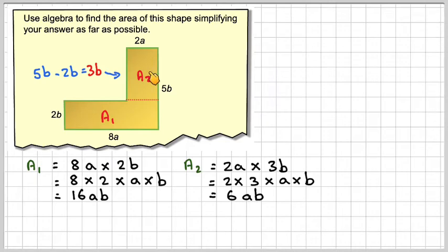Then in order to find the total area, we just need to add those together. So the total area will be 16ab plus 6ab, which will give me 22ab.